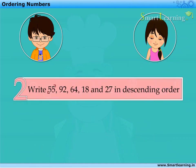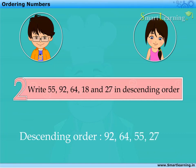Now, write 55, 92, 64, 18 and 27 in descending order. Starting from the largest number, we order these numbers as 92, 64, 55, 27 and 18.